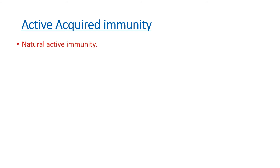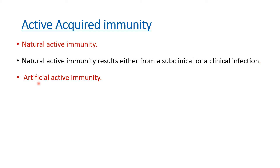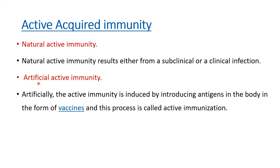Active acquired immunity can be further divided into natural and artificial. Natural active immunity means we get a disease and, due to that antigen, we develop immunity against it. It results either from a subclinical or a clinical infection. In artificial active immunity, we artificially introduce the antigen so the body mounts an immune response. This is done by introducing antigens into the body in the form of vaccines, which are either live vaccines or antigens in low doses that elicit an immune response without causing full infection.